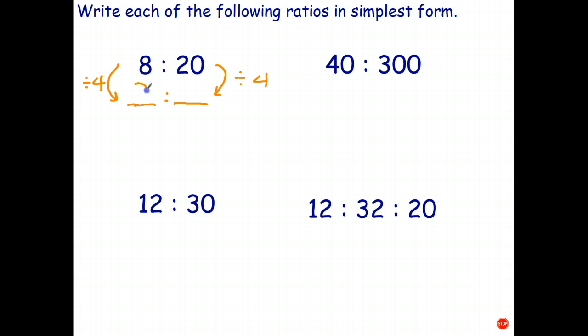Eight divide four is two. Twenty divide four is five. Quick check. Are there any other common factors other than one? And the answer is no. So two is to five is the simplest ratio.